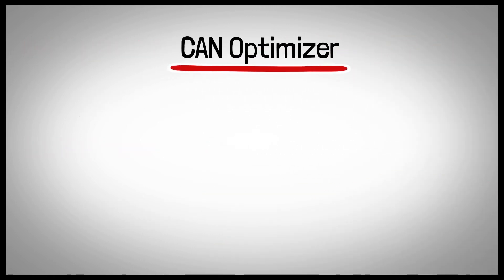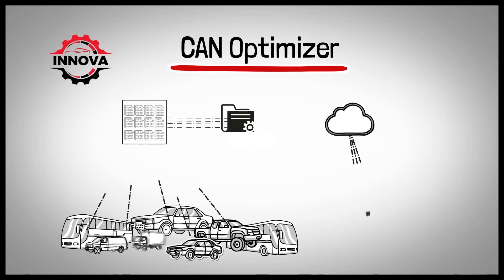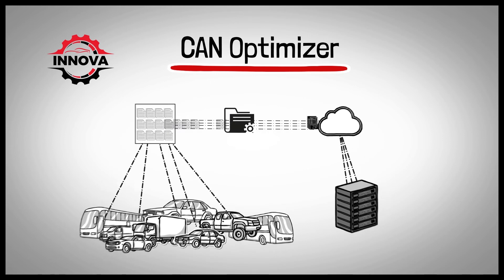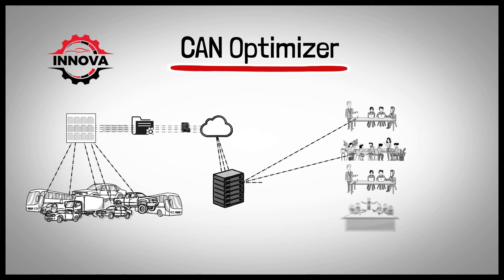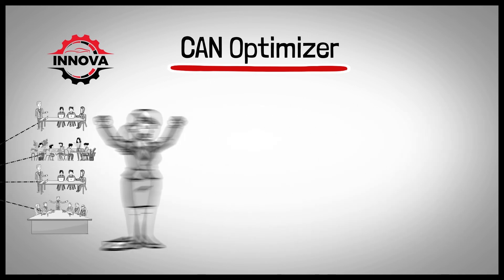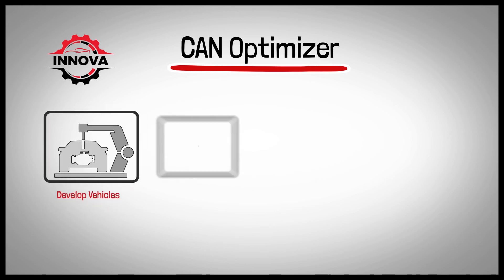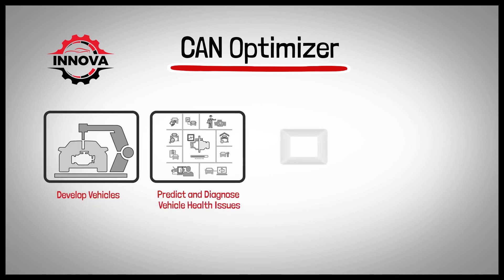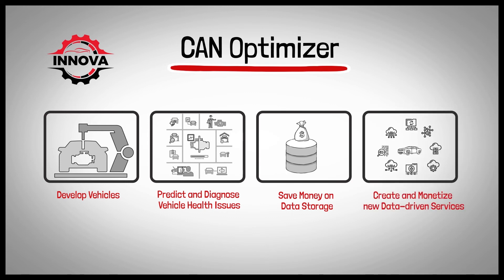By using CAN Optimizer, Innova can now send large amounts of vehicle data to their servers so that Innova's team members will have the data they need to more efficiently develop vehicles, predict and diagnose vehicle health issues, save money on data storage, and create and monetize new data-driven services for Innova's customers.